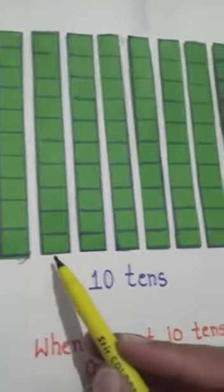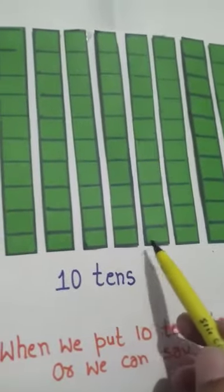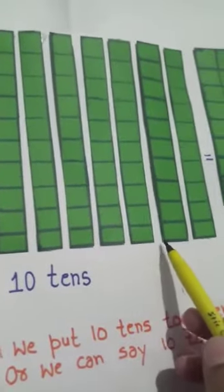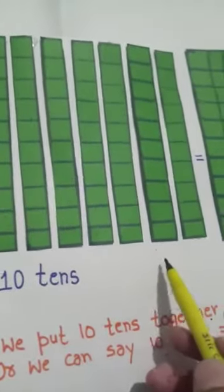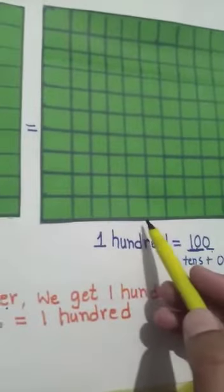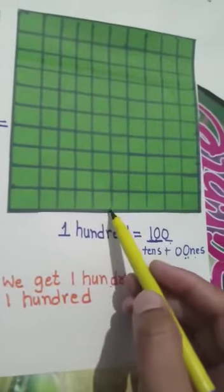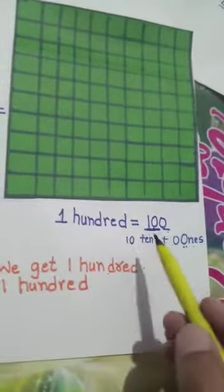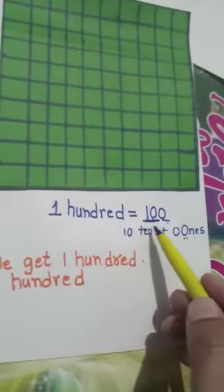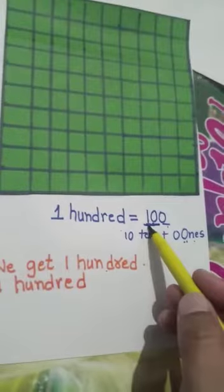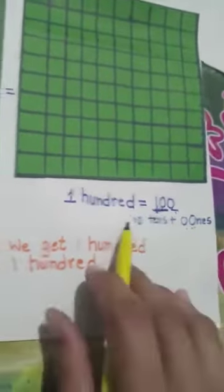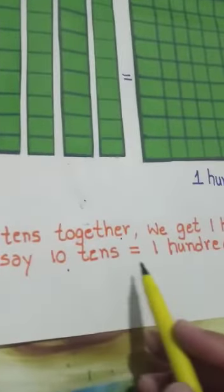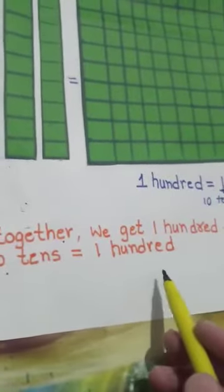Count: one, two, three, four, five, six, seven, eight, nine, and ten. When we put ten tens together, we get one hundred. We have ten tens and zero ones — ten tens equals one hundred.